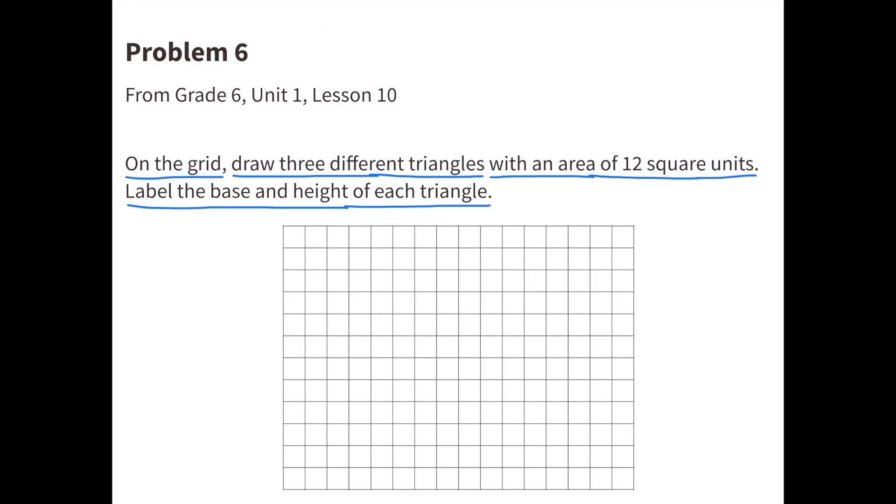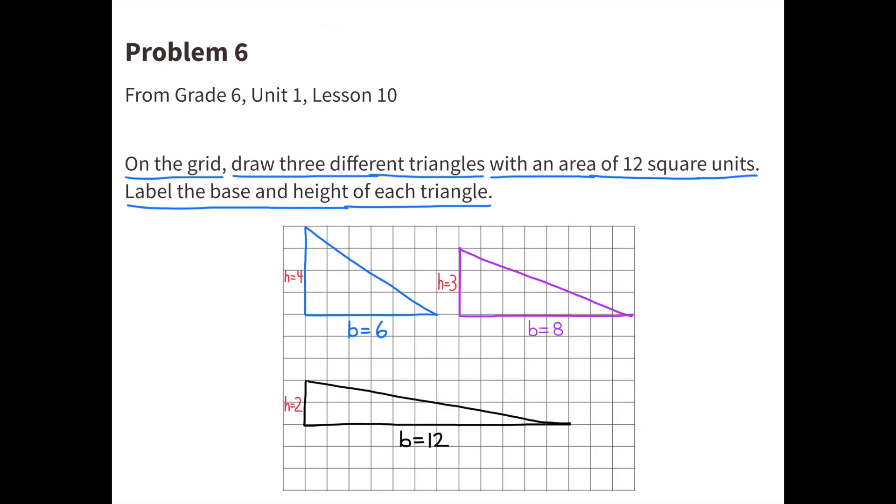Number 6. On the grid, draw 3 different triangles with an area of 12 square units. Label the base and height of each triangle. The first one has a base of 6 and a height of 4. Half of 6 is 3. 3 times 4 is 12. The second one has a base of 8 and a height of 3. Half of 8 is 4 and 4 times 3 is 12. And the third triangle has a base of 12 and a height of 2. Half of 12 is 6. 6 times 2 is 12. All three of these triangles have an area of 12 square units.